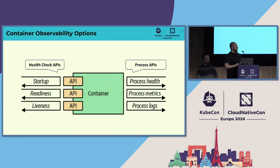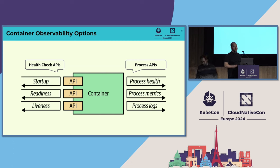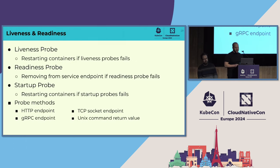Typically, process health checks alone are not enough. From practice, we know there are many cases when the process might be up but the application is not doing what you want. That's why we need additional APIs so the platform can find out the state of your application and perform corrective actions. There can be cases when your application is in a deadlock, hasn't started yet, or has run out of memory. A liveness probe is supposed to detect when your application is in a deadlock — the process is up but not functioning — and the corrective action is restarting your container.